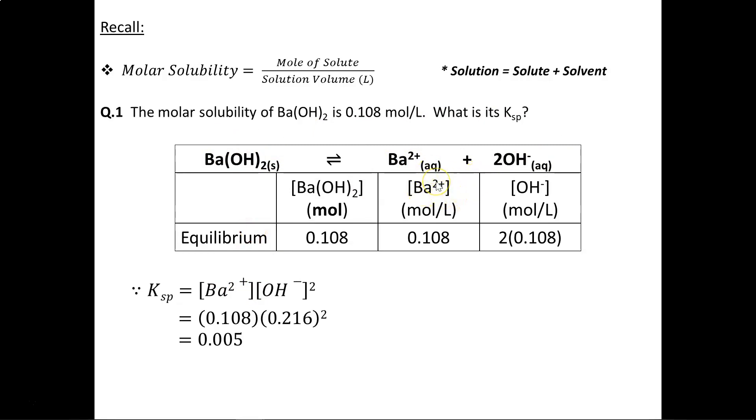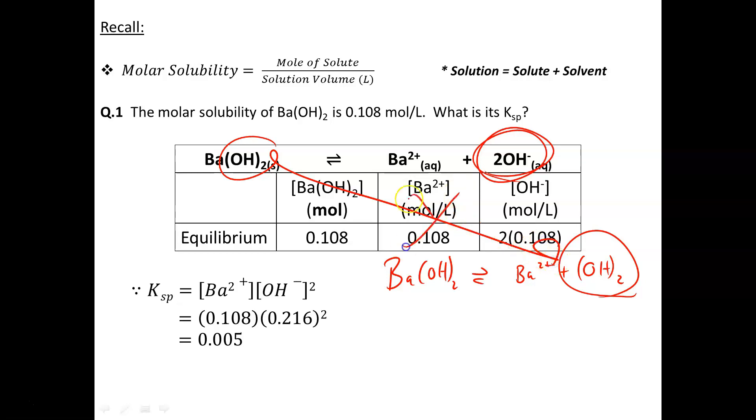Another common mistake I typically see students make is to write the dissolution equation as barium hydroxide produces a barium ion and an OH₂. No, no, no. What happens is barium hydroxide releases two hydroxides, not an OH₂ combined together. Please be careful. We do not go this route. Barium hydroxide will break up into two hydroxides, not an OH₂. That becomes important because now we can see there is a 1 to 1 to 2 ratio.